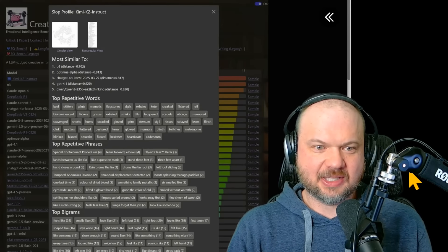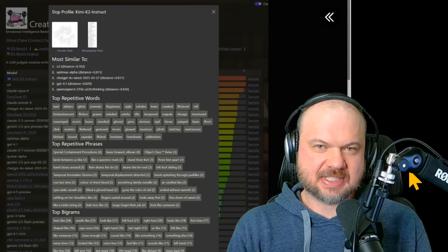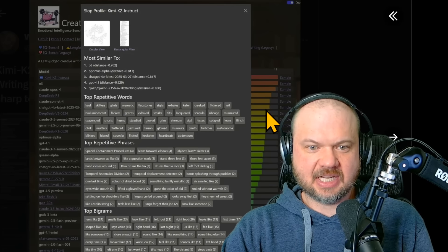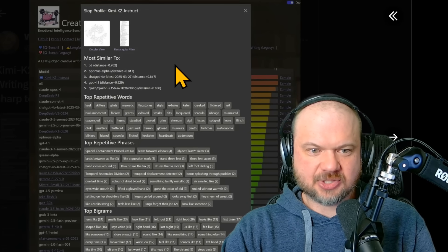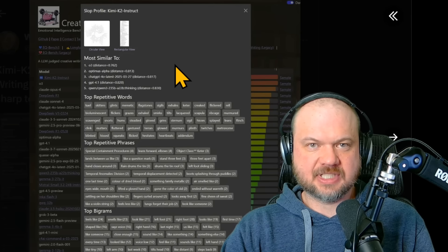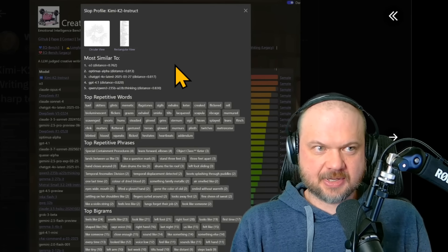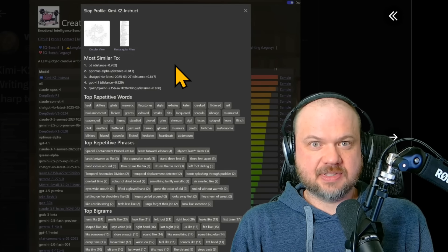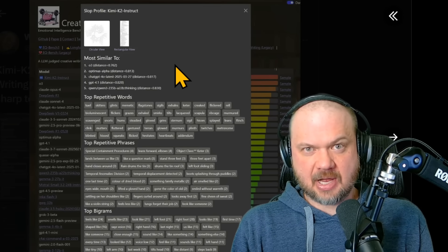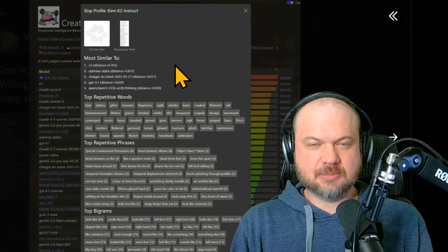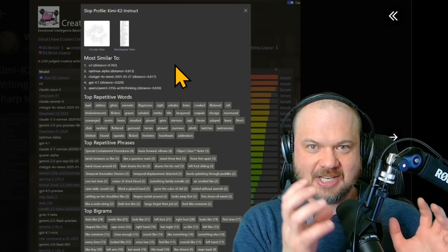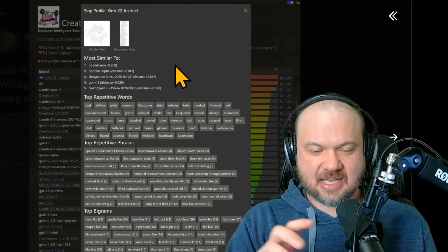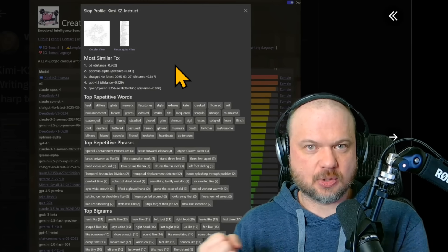One thing I really like about the EQ Bench is that they track how similar certain models are to one another, because we are able to tell which models are most like other models. So for example, some of the earlier iterations from DeepSeek were very much like some of the other OpenAI models. Later iterations of DeepSeek were more like Google Gemini. Now, what this probably means is that these models use knowledge distillation from those models, right? So they take that data, the synthetic reasoning data, and they kind of create their own models with it.